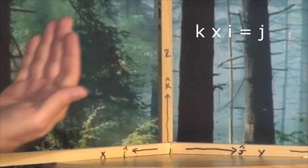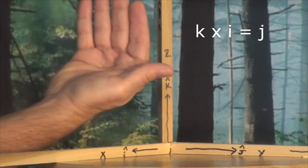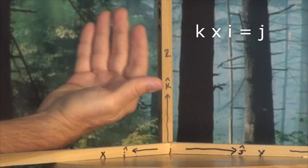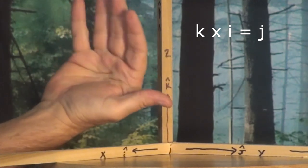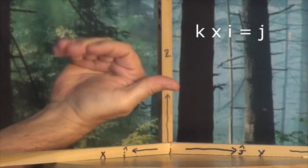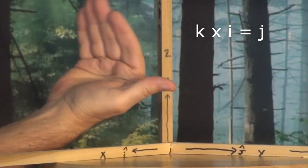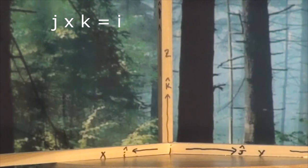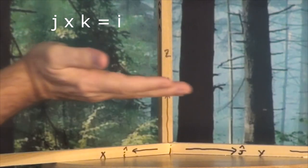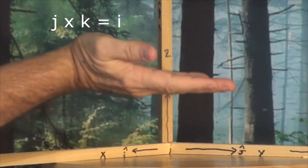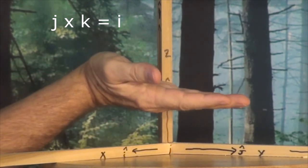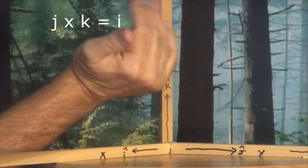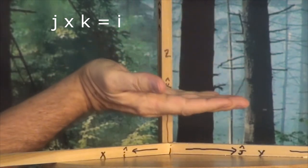For K cross I, we put our fingers in the direction of K, curl them toward I, and our thumb points in the J direction. For J cross K, put our fingers in the direction of J, curl them toward K, and our thumb points in the I hat direction.